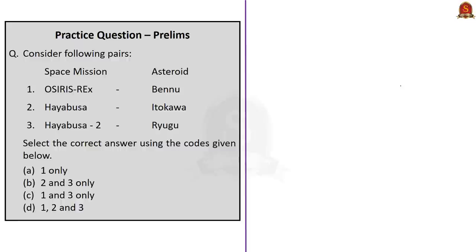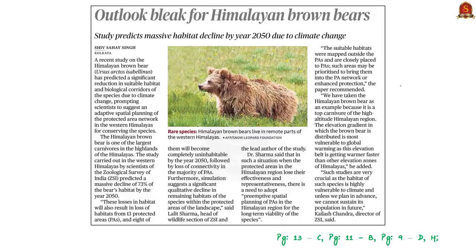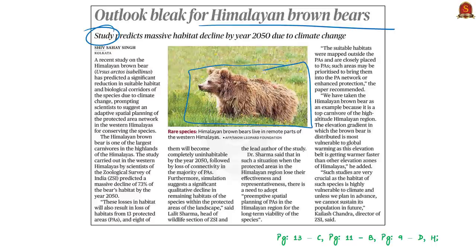The next news article discusses a recent study conducted on the Himalayan brown bear by scientists of the Zoological Survey of India. It is predicted that the species may undergo a massive decline of 73% in terms of suitable habitat and biological corridors by the year 2050. According to scientists, this reduction is mainly attributed to climate change. They suggest adaptive spatial planning of the protected area network in the western Himalayas for conserving this species.